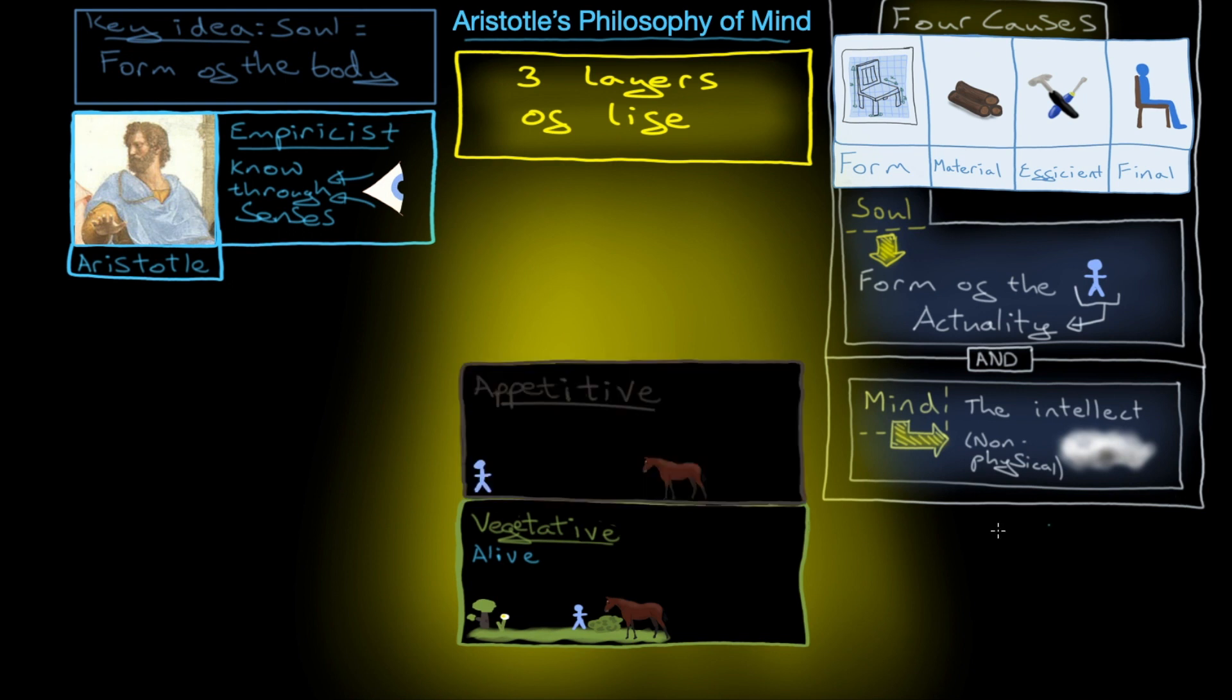The next layer up is the appetitive. Notice here the plants have dropped off, but we still have animals and people. The appetitive is the other part of the soul. It is, as the word suggests, related to appetite - a desire for something or a desire against other things.